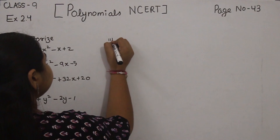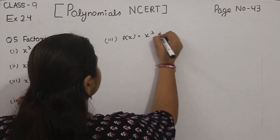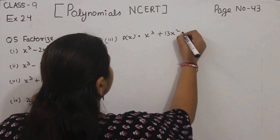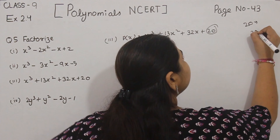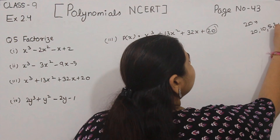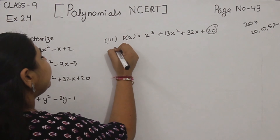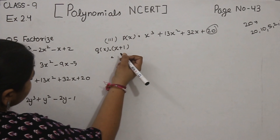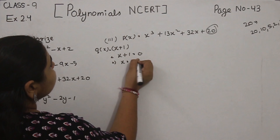Now part 3: P(x) is equal to x³ + 13x² + 32x + 20. We will take the constant term 20. The factors of 20 are 20, 10, 5, 2, 1. So I will take 1, and write Q(x) as x + 1. If Q(x) = x + 1, then x + 1 = 0, so x = -1.